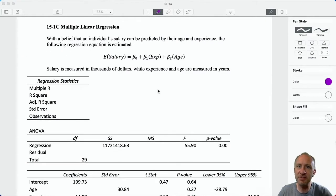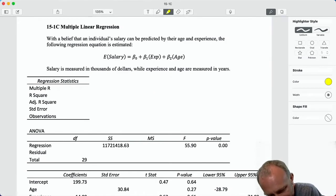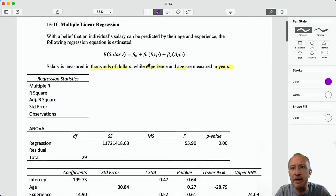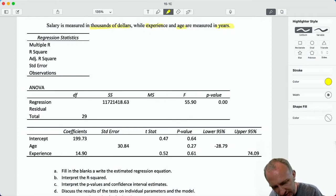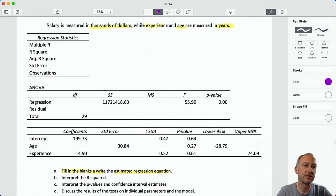We have a belief that an individual's salary can be predicted by their age and by how much experience they have. So here's our regression equation: salary, which is measured in thousands of dollars, and years of experience and age, which are measured in years. We have a partial output. Our first task, of course, is to fill in the blanks and get that estimated regression equation.